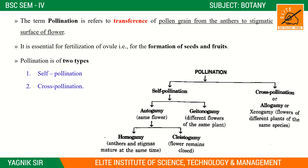So this is the basic chart. First of all we will learn about self pollination. Please remember these terms: self pollination is divided into two types — autogamy and geitonogamy. Autogamy is further divided into homogamy and cleistogamy.